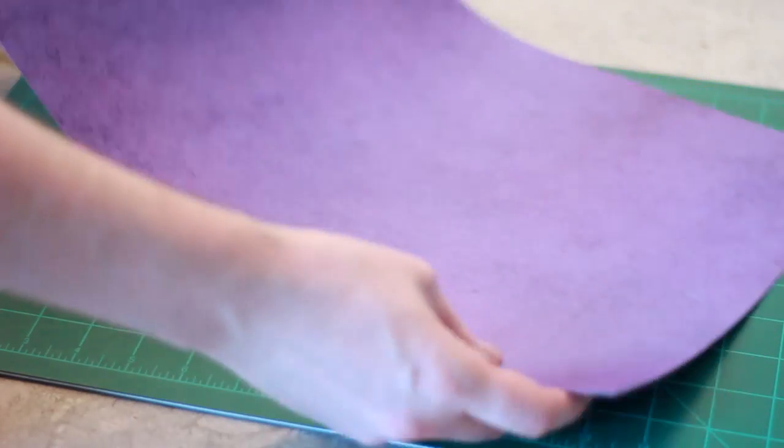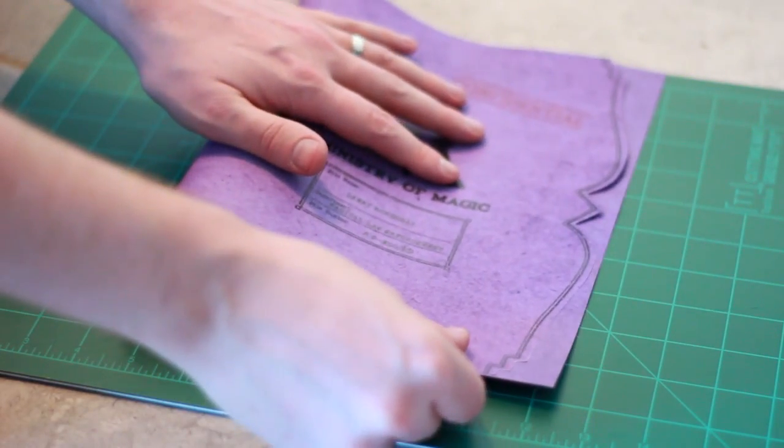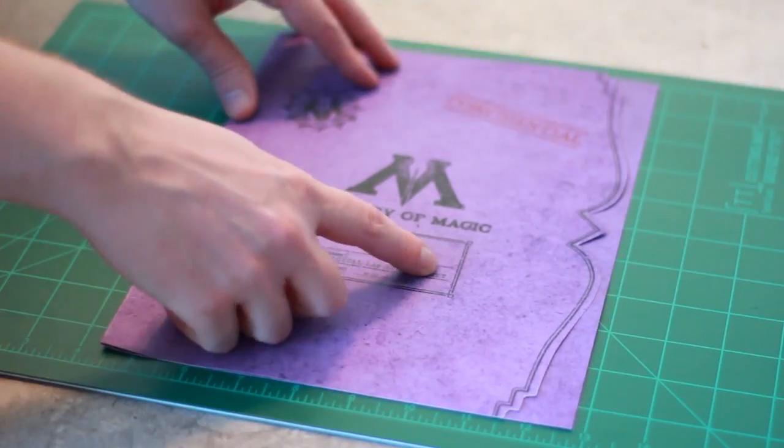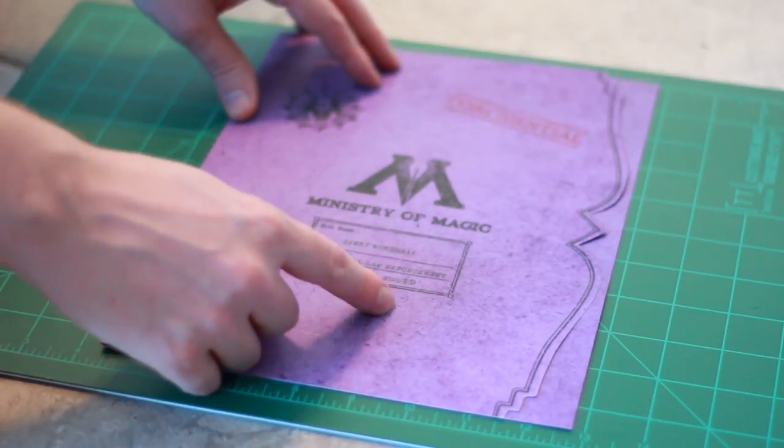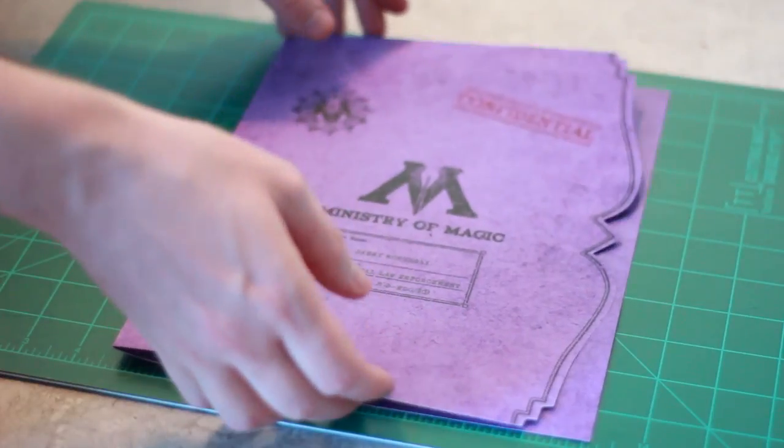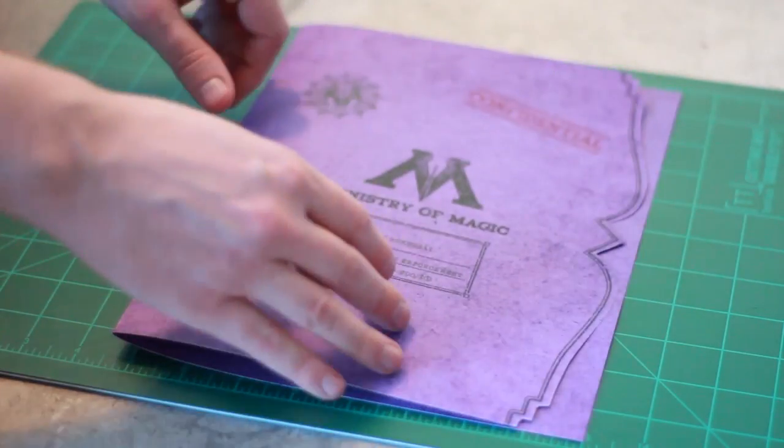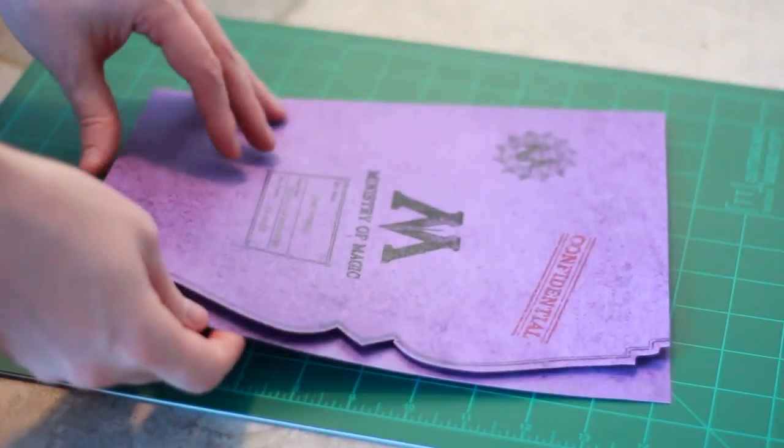Once you have the folder cut out, you're just going to fold it in half. Also, it is worth noting that all of the stuff that I'm using today actually has my information on it, but the templates that I upload are going to be blank so you can customize them as much as you want. And that's pretty much it for the folder.